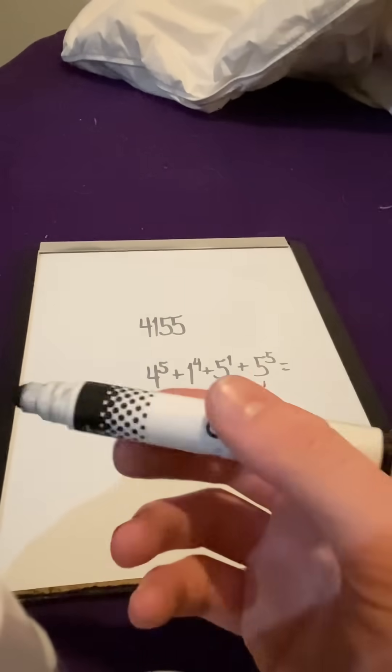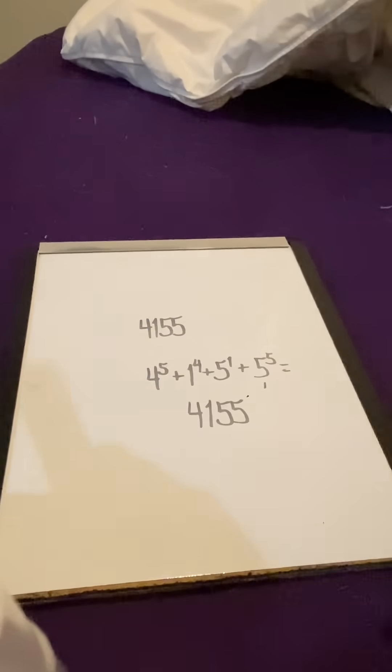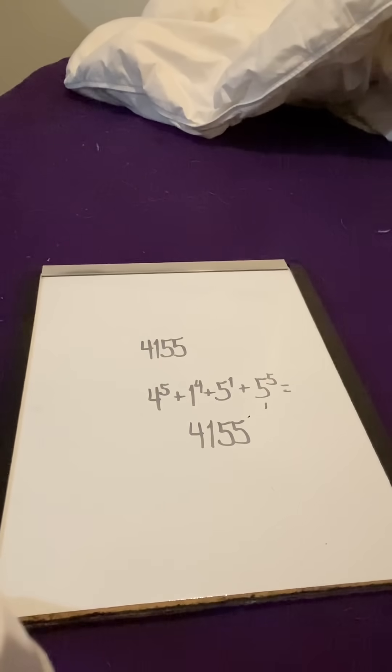But, as you can see, instead of being looped around from the 4, it's looped around from the 5 at the end right there. So 4,155 is 4 to the 5th plus 1 to the 4th plus 5 to the 1st plus 5 to the 5th.